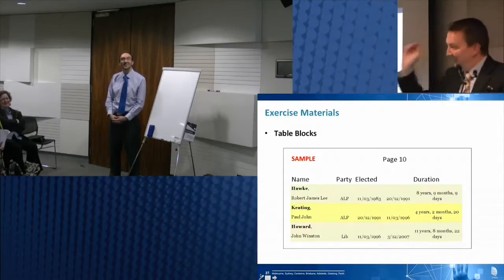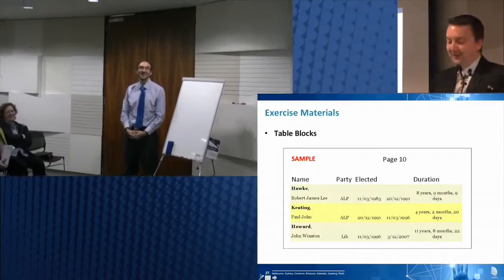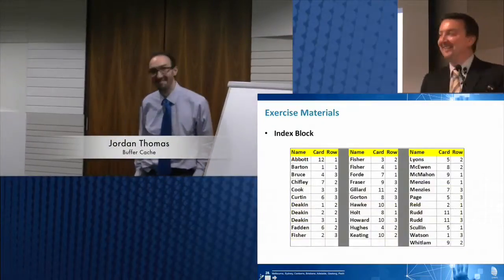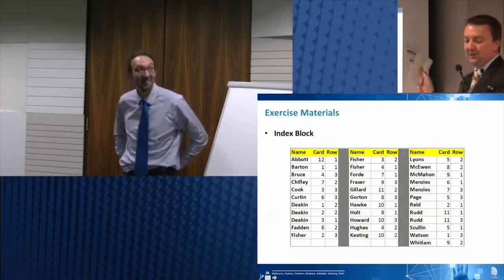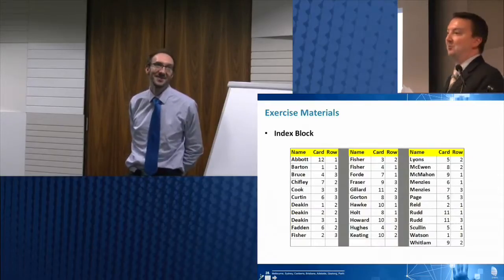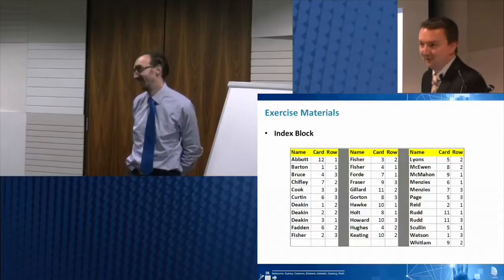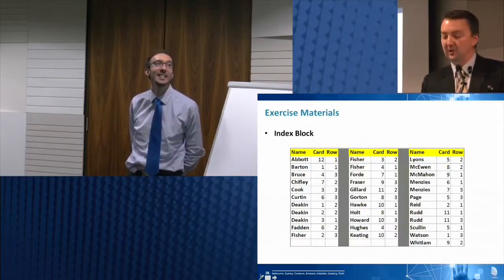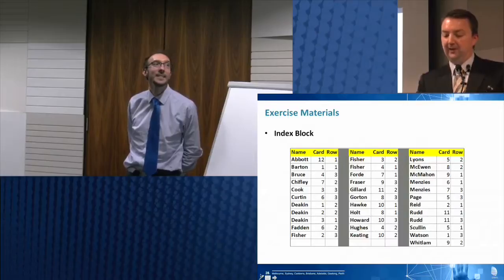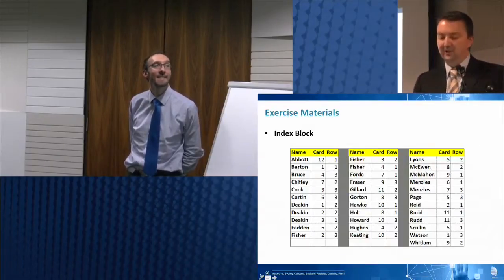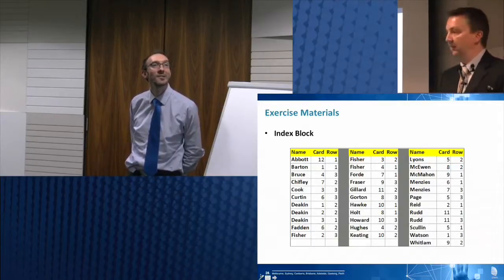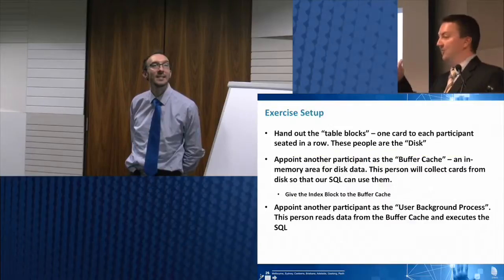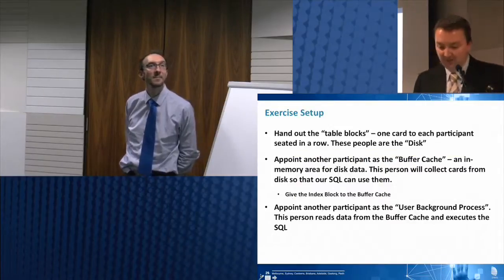Each one of you will have a card. Jordan has the special role - he is the buffer cache. Anyone know what buffer cache is? It's a very responsible role. I've got index blocks here as well - the index cards. The index cards will be in the buffer cache in this example. Here's an example of the index block. If you have a look at the very first entry in the index block, this is an index on surname. I've got surname Abbott - Abbott is going to be found on card 12, or block 12 in the database, row one. That's how indexes work. I'm not going to attempt to replicate the B-tree structure of the index - I've already explained that, I assume you get it.